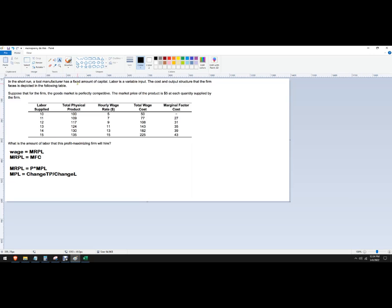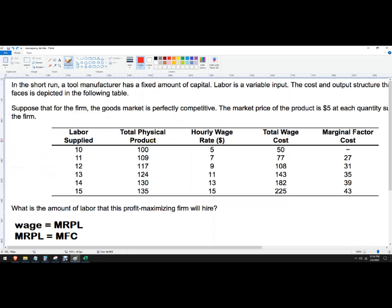We're trying to figure out where does this happen and for how many workers are we going to hire. I'm going to zoom in a little bit. I've got total physical products and now I want marginal products and marginal revenue product of labor. Essentially, how much is each worker worth?